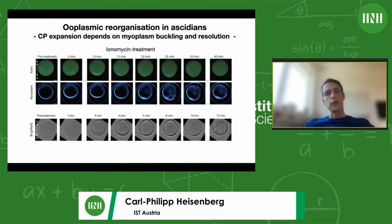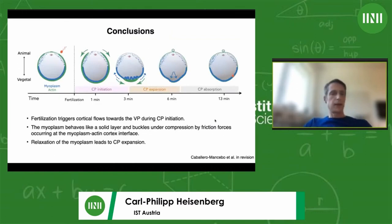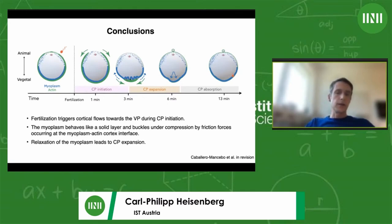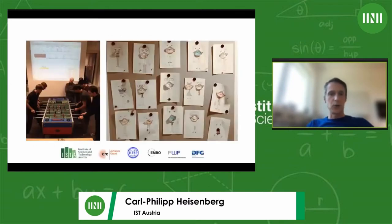This supports the proposed mechanism: what is needed is actomyosin flows leading to buckling of the myoplasm into multiple buckles, then the actomyosin flows stop and actomyosin contraction decreases, allowing these buckles to resolve into one single buckle, giving rise to the contraction pole. In conclusion, very much in line with what Sardet proposed, there are actomyosin flows originating at the animal pool and leading to accumulation at the vegetal pole. But different from the idea that this directly leads to contraction pole formation, we see that these flows lead to buckling of the myoplasm, and the resolution of these buckles eventually leads to the formation of the contraction pole, which then sets the blueprint for further movement of the myoplasm to the posterior side of the oocyte and segregation into different blastomeres.